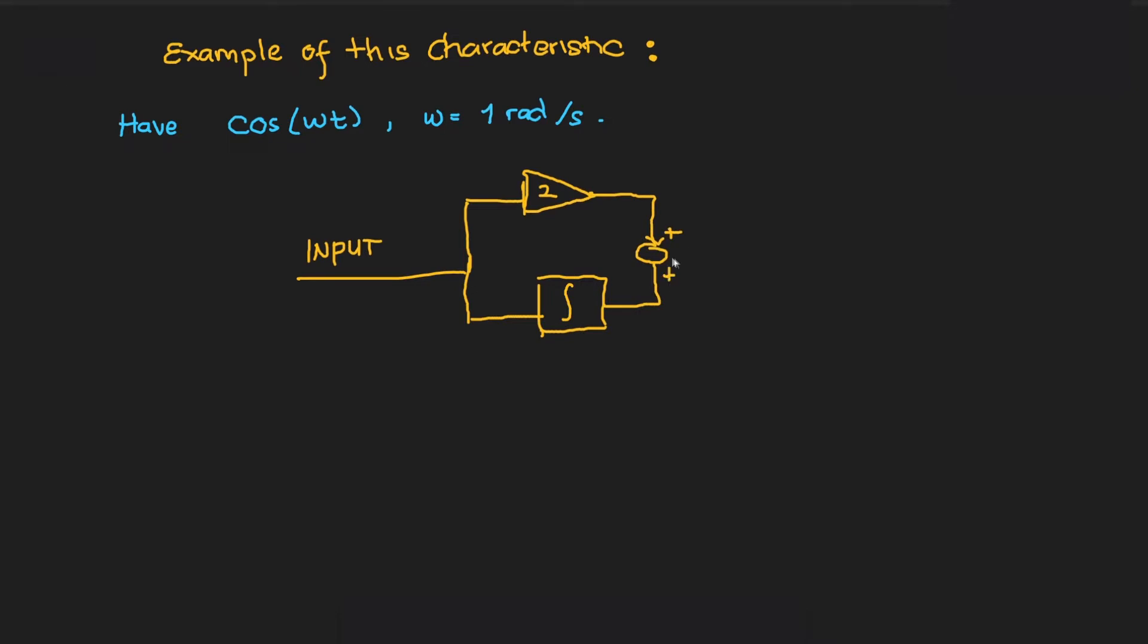Say we have a sine wave of cos(ωt) as an input to a system, with ω = 1 rad/s. The input will split into two: one will go through a gain multiplier of 2, and the other through an integrator. The output response will yield 2cos(t) + sin(t).